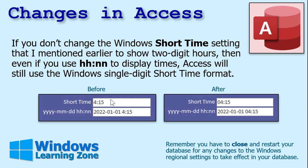Personally, I think that's a bug — but it'll convert this over to short time. So you have to make the changes at the Windows level. Instead of a single-digit hour, you get the two-digit hour. That's why I like to do that.